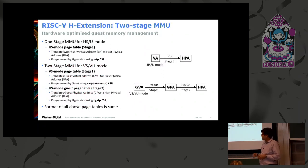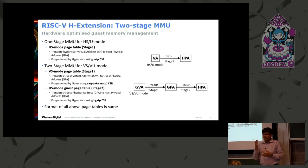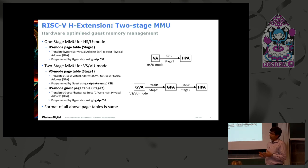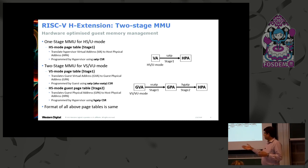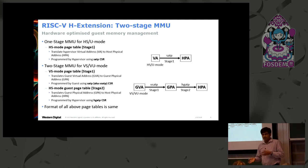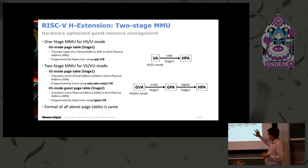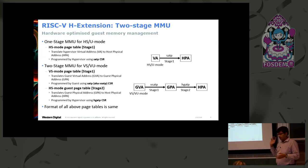Just like any modern architecture with virtualization support, we also have a two-stage MMU. The HS mode and U mode have a single stage — the HS mode page table — which translates hypervisor virtual addresses to host physical addresses and is programmed by the hypervisor itself. When running a guest or VM, we have a two-stage MMU: stage one (VS mode page table) translates guest virtual to guest physical addresses, and stage two (programmed by the hypervisor per VM) translates guest physical to host physical addresses. This is very similar to Intel EPT and ARM nested page tables.